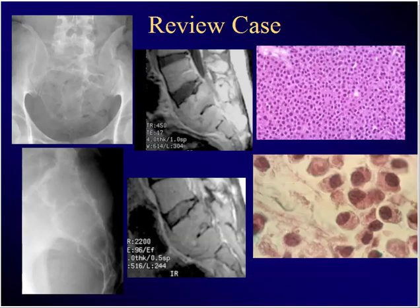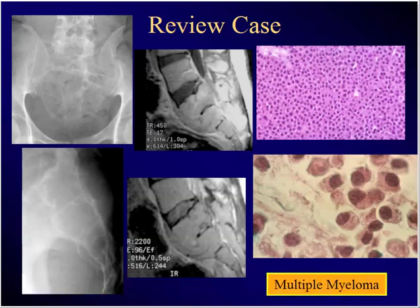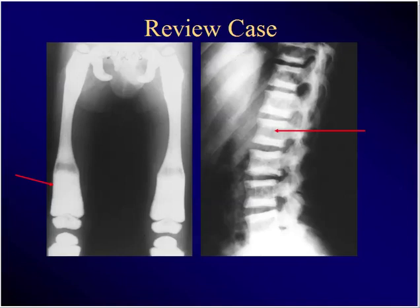Here's a 60-year-old with low back pain and gluteal pain, with this radiograph, MR, and histology. What's the diagnosis? Multiple myeloma. Then here's a basic science case — what's the diagnosis? Osteopetrosis. You get this rugger jersey spine. Where do you see rugger jersey spine in an adult? Renal osteodystrophy. That's a basic science thing — remember that.